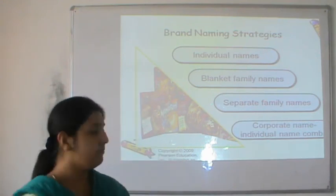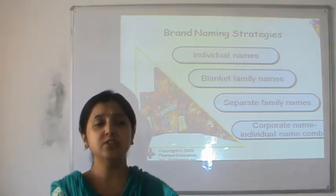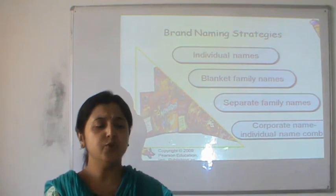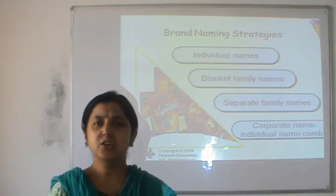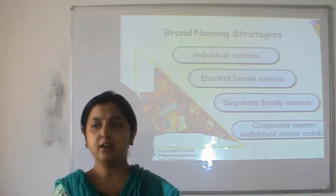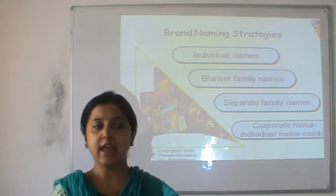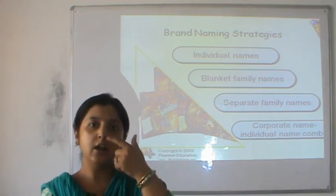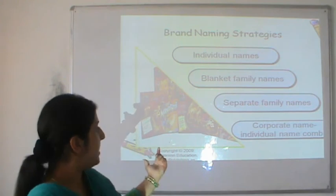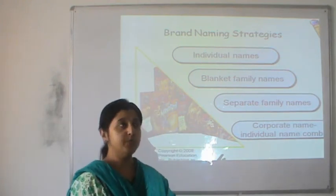The fourth strategy is the corporate name combined with an individual name — the most common strategy. For example, Tata has Tata 407, Tata Nano, Tata Sierra, Tata Safari — along with the corporate name there is also an individual name. Johnson & Johnson is an example of the blanket family name: Johnson's Baby Wipe, Johnson's Baby Powder, Johnson's Baby Shampoo, Johnson's Baby Clean, Johnson's Baby Lotion.